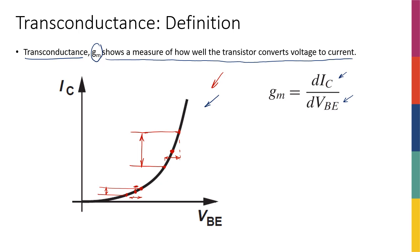Why transconductance? It's conductance because it's current over voltage. Remember, voltage over current is resistance, and one over that — current over voltage — is conductance. Why trans-conductance? Because it's not IC over VC. If I'm relating the current of one terminal to the voltage between two other terminals, then there's a transfer involved — that's why it's called transconductance.